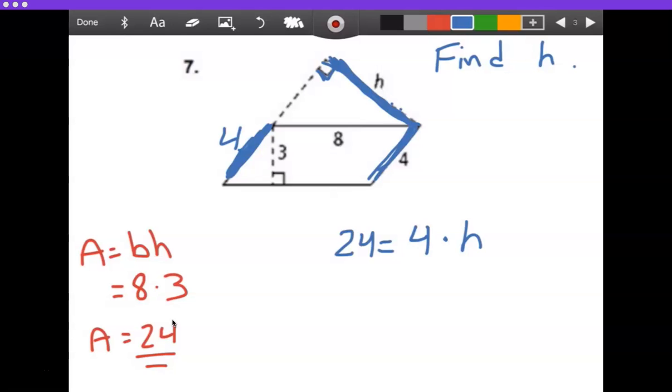All right, so you multiply two of the numbers, we multiplied the 3 and the 8, and then we're going to basically take that 3 times 8 right here, and we're going to divide it by the number we didn't use yet. Because what we need to do is get h all by itself on this side, so it's going to be 24 divided by 4, which is 6.